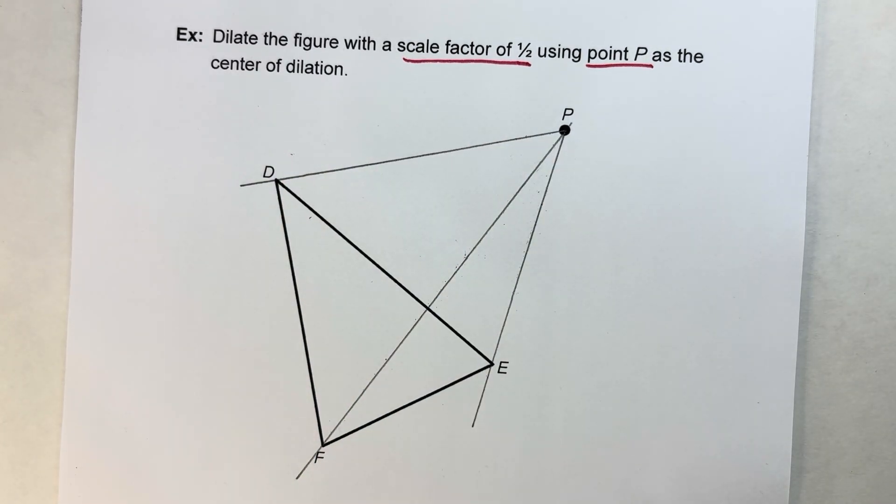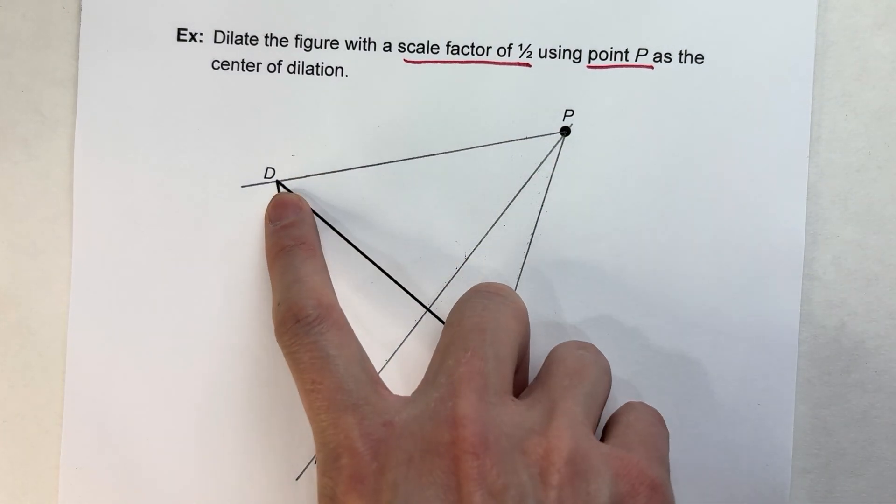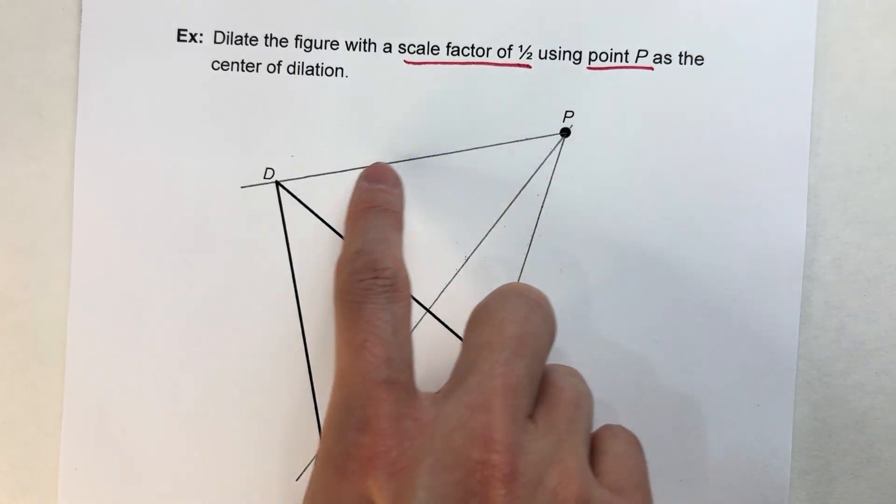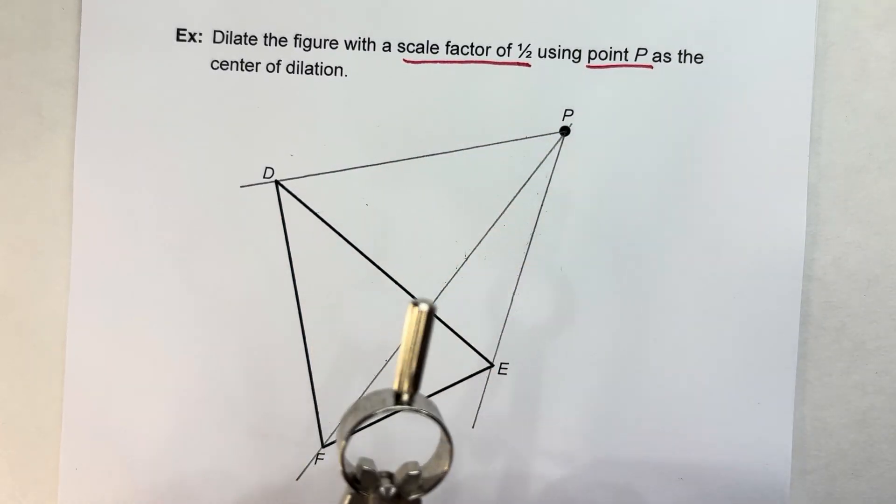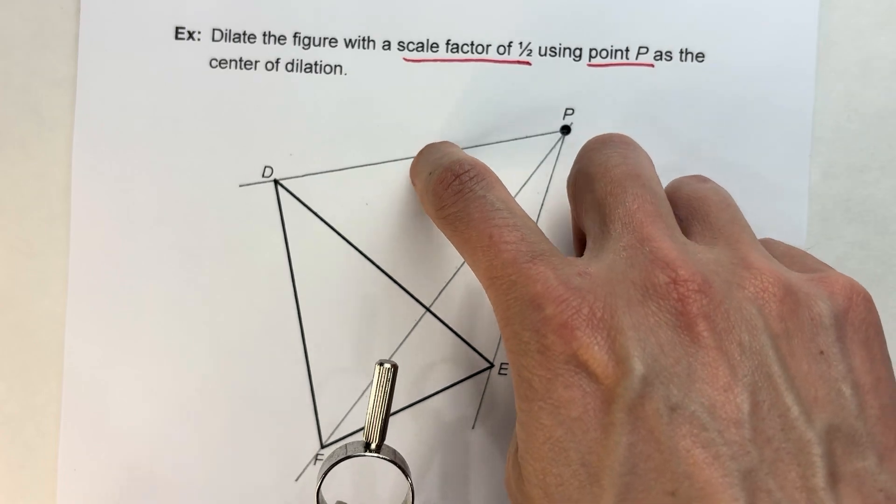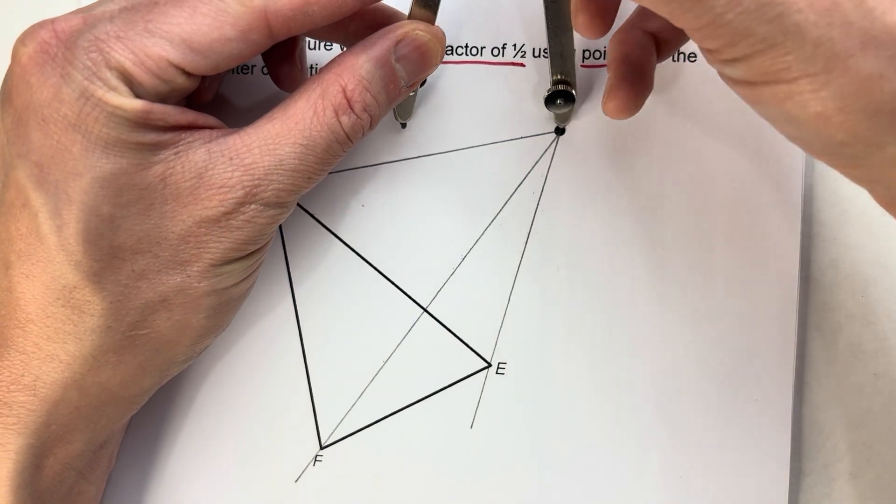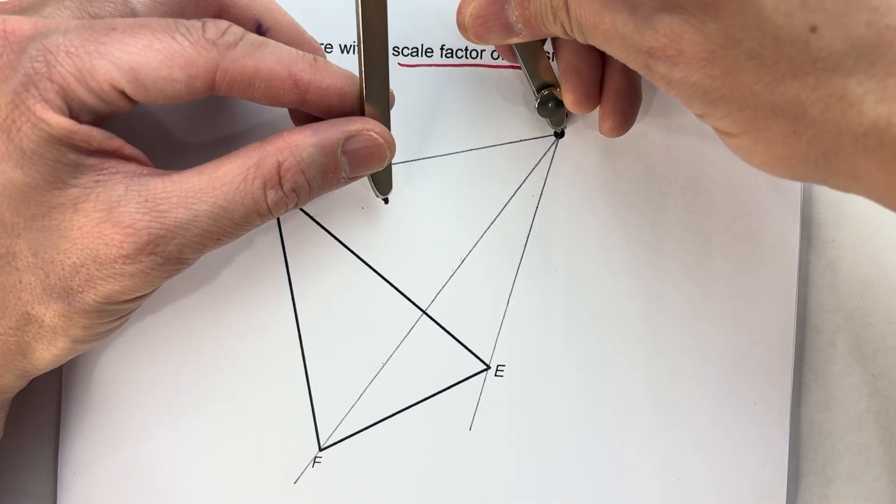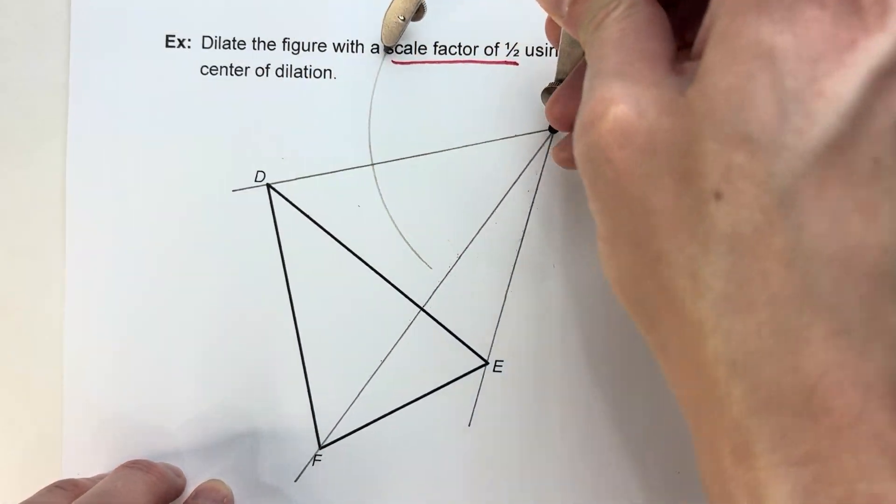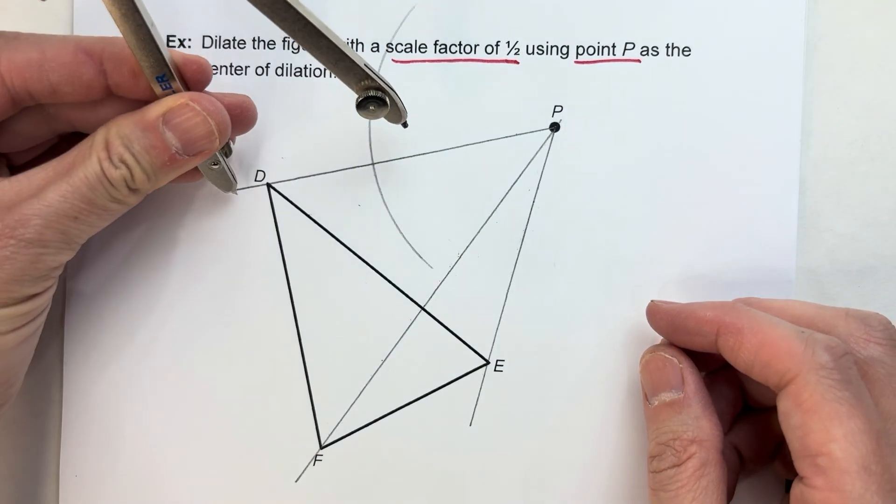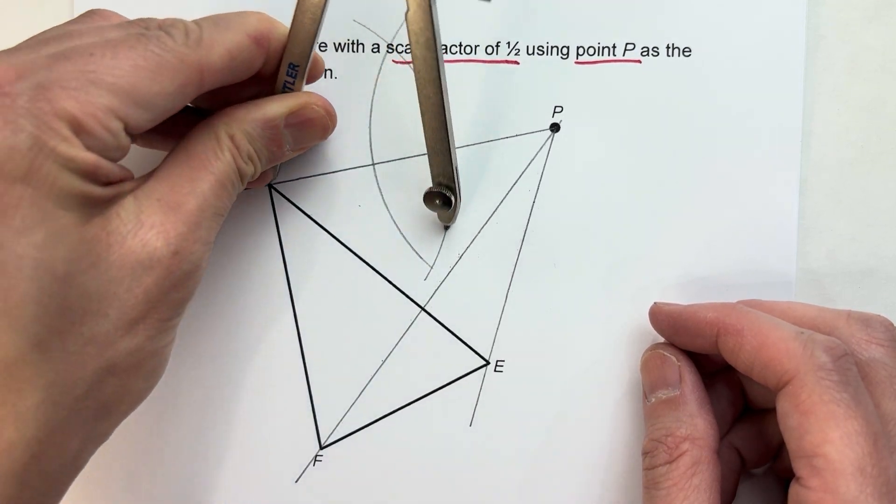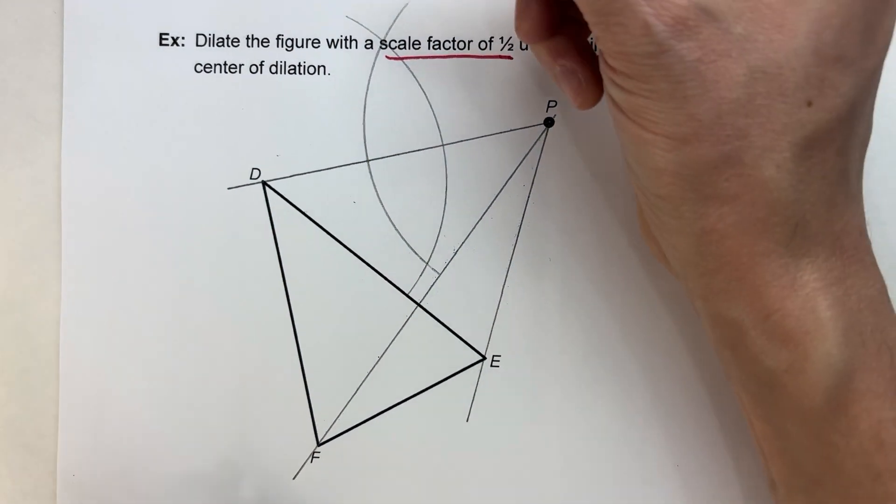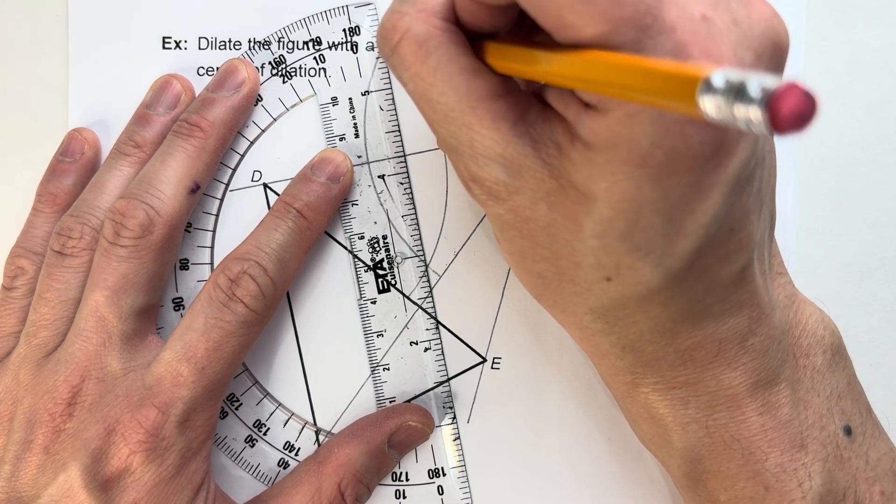Now this distance from D to P, we need to find the halfway point because we're going to cut it in half. Now, how do I find the halfway point of this distance? I'm going to construct a perpendicular bisector to find that midpoint. And if you don't remember how to find a perpendicular bisector, I do have a video on how to do that. But what I'm going to do is set my distance of my compass for more than half the distance of this line and swing an arc. And then keep that same distance on the other side of this segment and swing an arc. I just barely got there. Let me do this a little bit more. There we go.